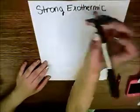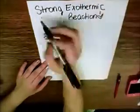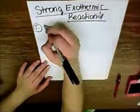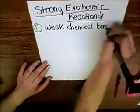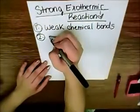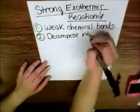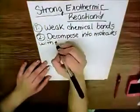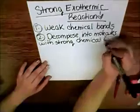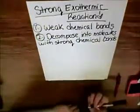And basically an explosion is a strong exothermic reaction. What is an exothermic reaction? Well it's any reaction where you start with weak chemical bonds and you make molecules with strong chemical bonds. You decompose into molecules with strong chemical bonds. That's really what you need to have a strong exothermic reaction.